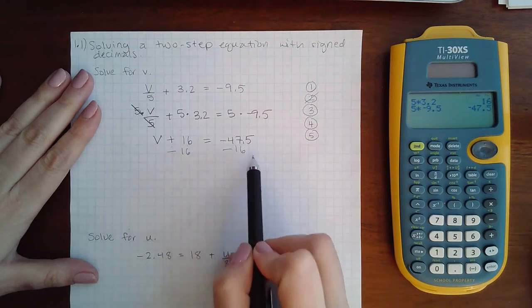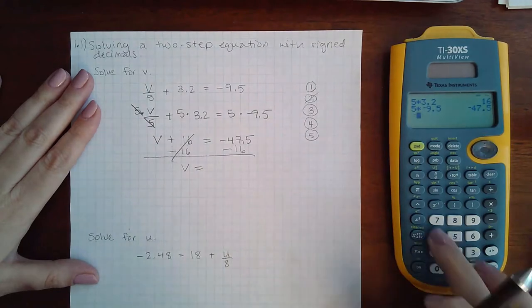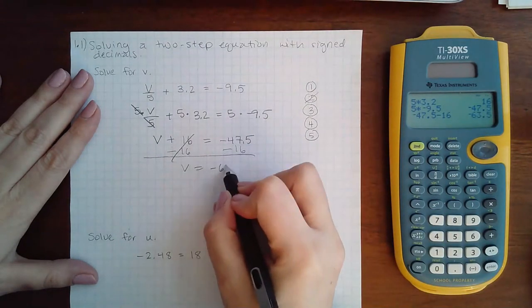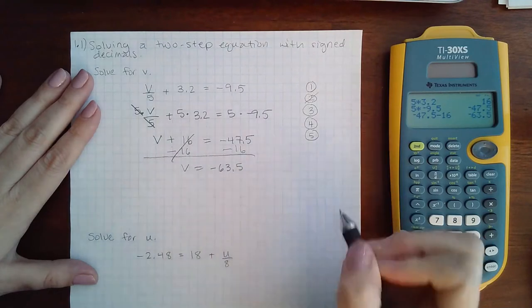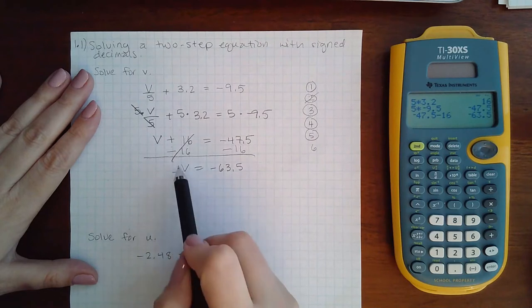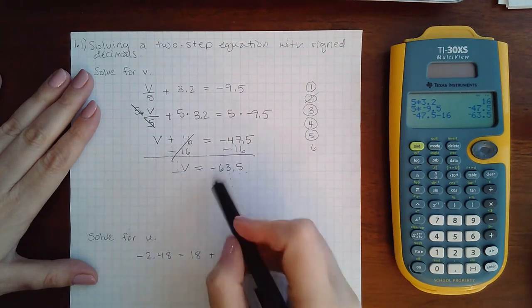and I get negative 63.5. And then the last step would be divide by a coefficient, but there's no coefficient here, it's just an invisible one, and if you divide this by an invisible one you're going to get the exact same number.